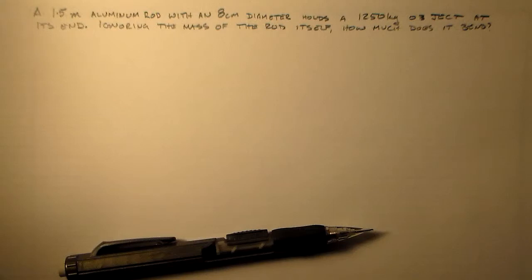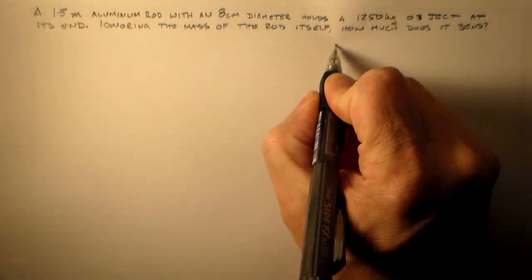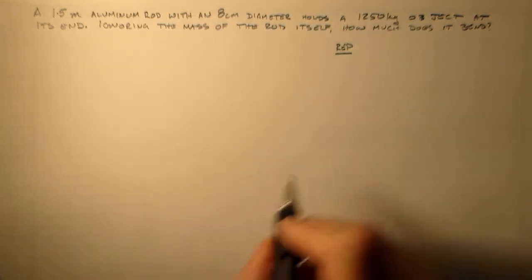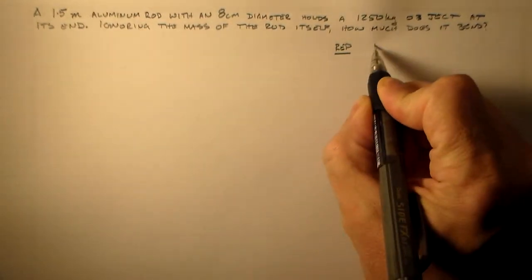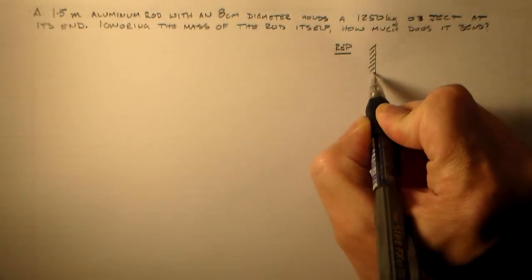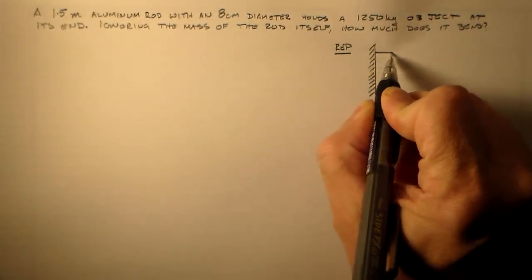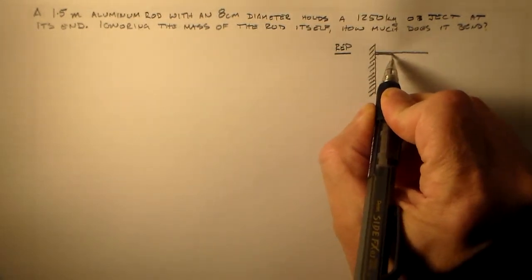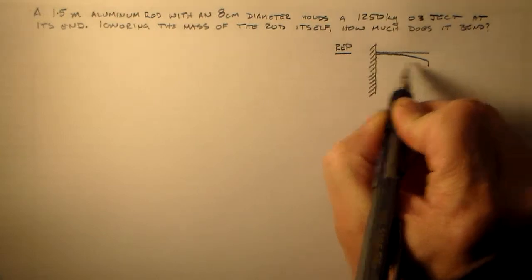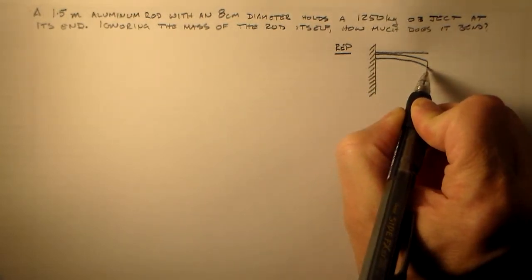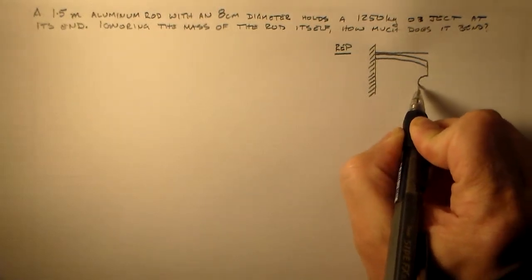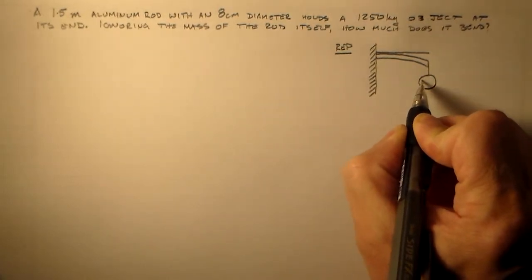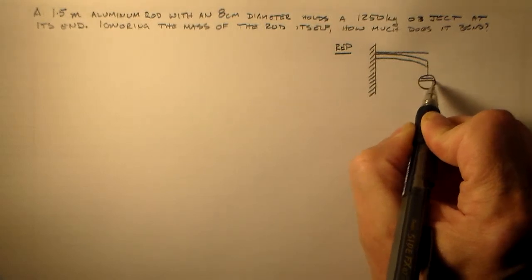So it's a really thick rod and it holds a very heavy object at its end. It's about 1,250 kilograms, and I want to know how much it bends. So let's draw that out, see what it looks like. Let's represent that as something. So I've got, say, a wall, and I'm going to put a rod out like that, but he's actually going to come on down like this. He's going to shear like that.